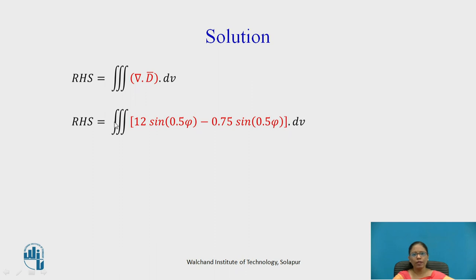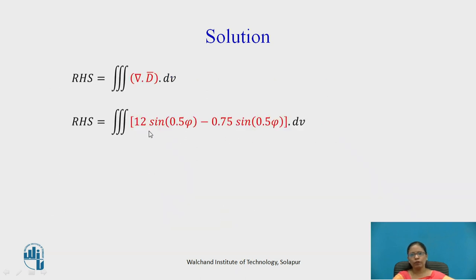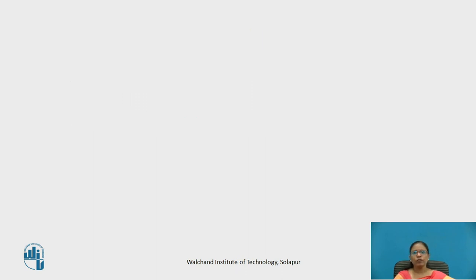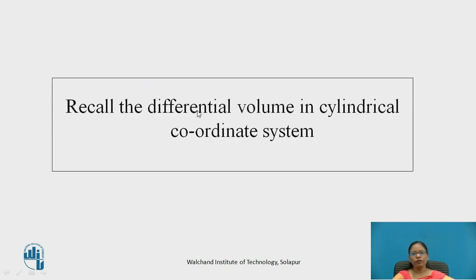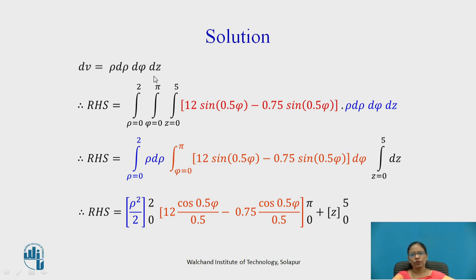Now let us find the RHS of the divergence theorem: the volume integral of del dot D-bar dV. I substitute the expression for del dot D-bar and need to include dV in cylindrical coordinates. The differential volume dV in cylindrical coordinates is dρ · ρdφ · dz, i.e., dV = ρ dρ dφ dz. Substituting both del dot D-bar and dV into the RHS integral gives the full triple integral expression.